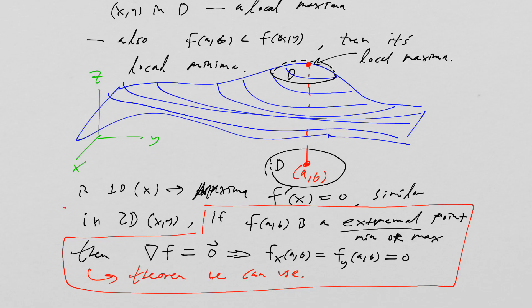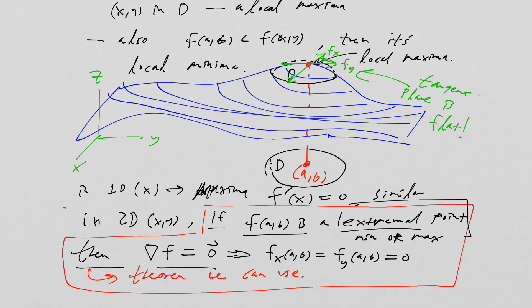This is actually a theorem we can use. The idea is: if you have derivatives fy and fx, you basically have a tangent plane here, and the tangent plane is flat in two dimensions. If that's so, then we know we're probably at an extremal point. It should be noted that a zero derivative doesn't necessarily mean we're at an extremal point. If it is an extremal point, then the gradient is zero — but finding a place where the gradient is zero doesn't necessarily mean the function is at an extremal point. That's a really important distinction.